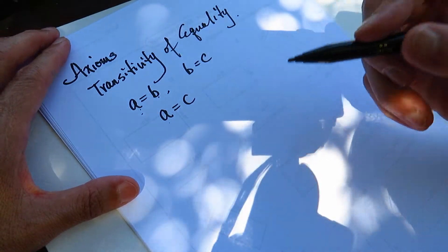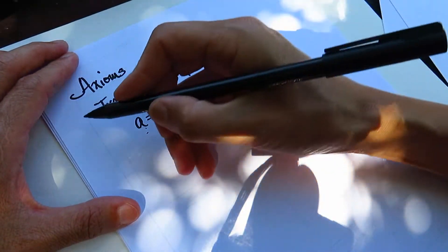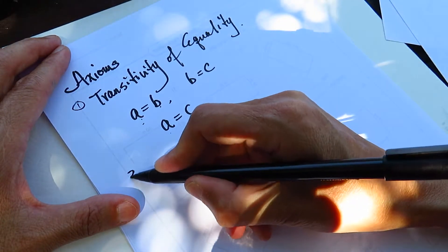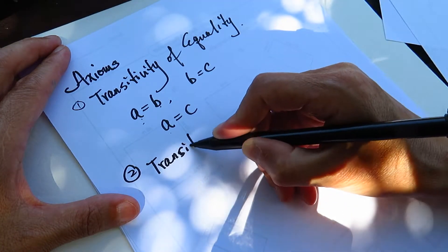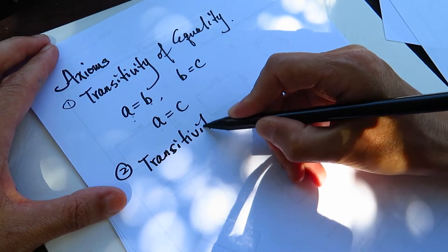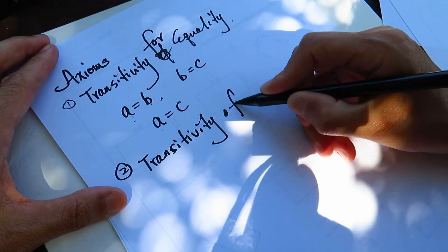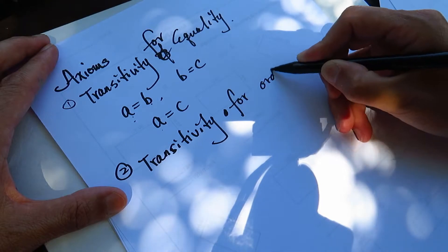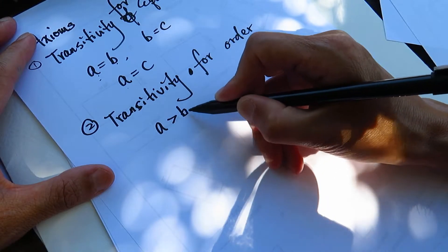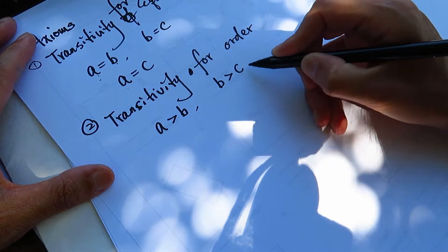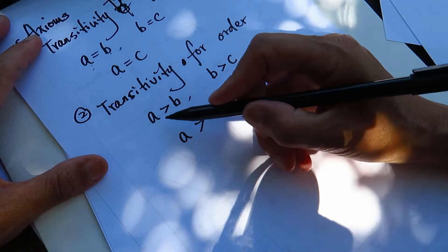So, transitivity of equality — can you see it? I cannot see very well because my camera is broken. The second one is transitivity for order. If A is bigger than B and B is bigger than C, then A is bigger than C. How do we explain it?